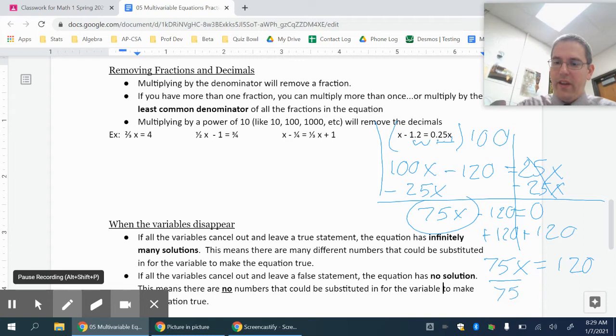In this case, 120 divided by 75 will reduce. I can divide both of them by 5. So 5 goes into 12 two times.